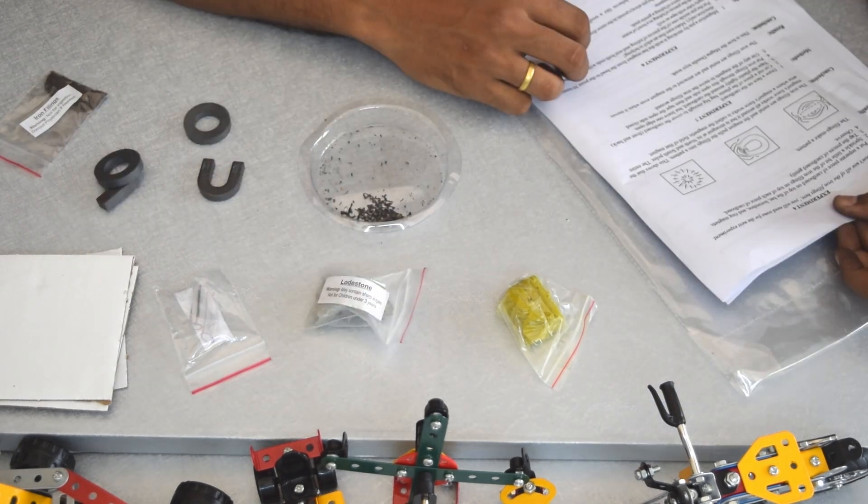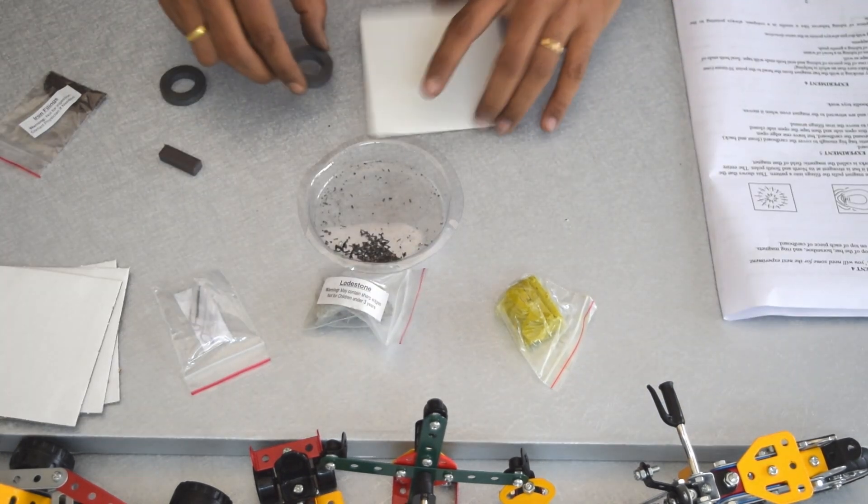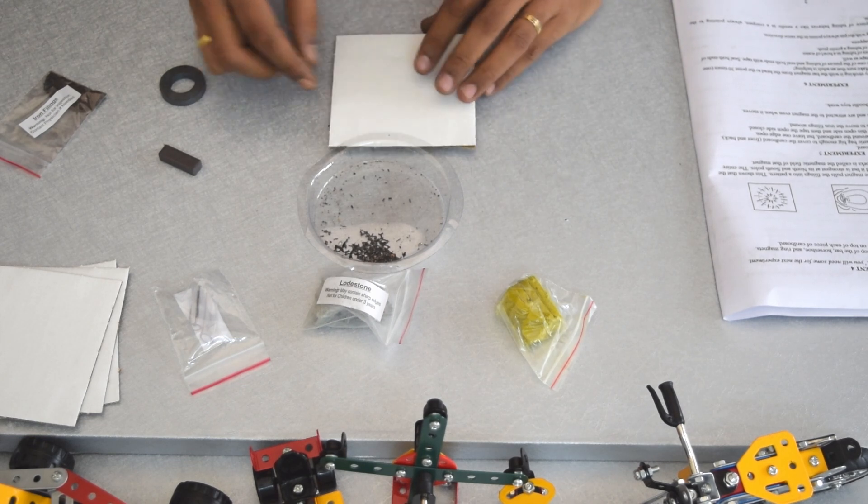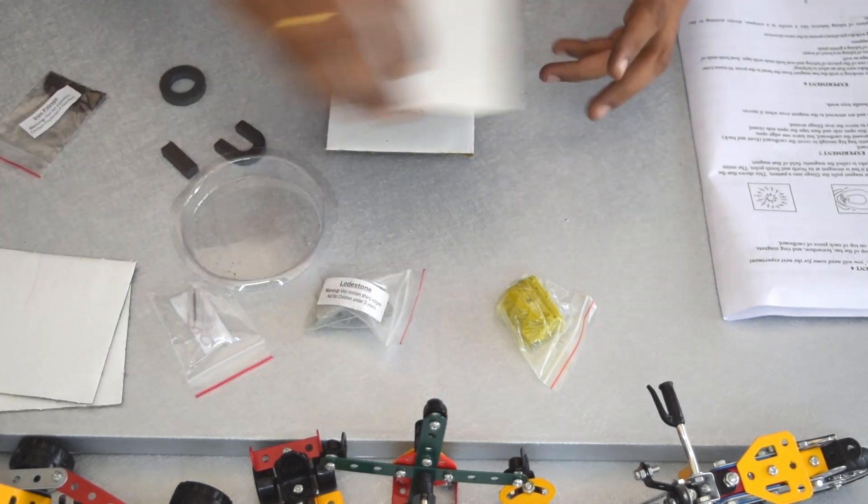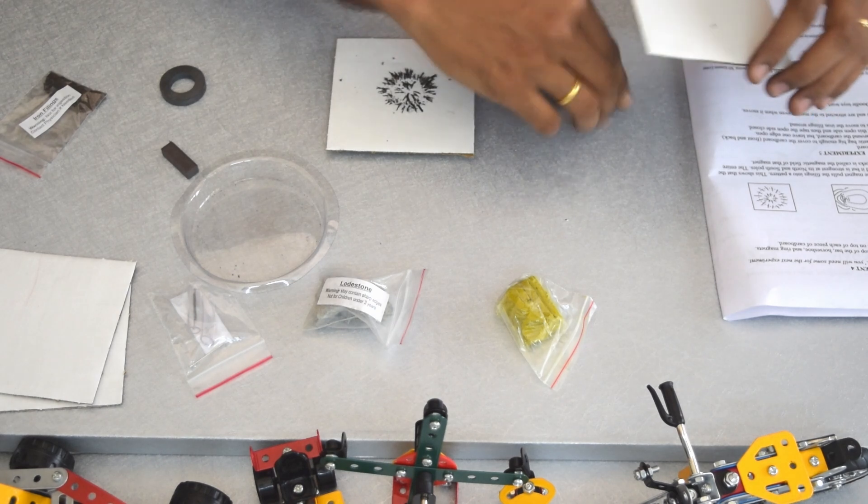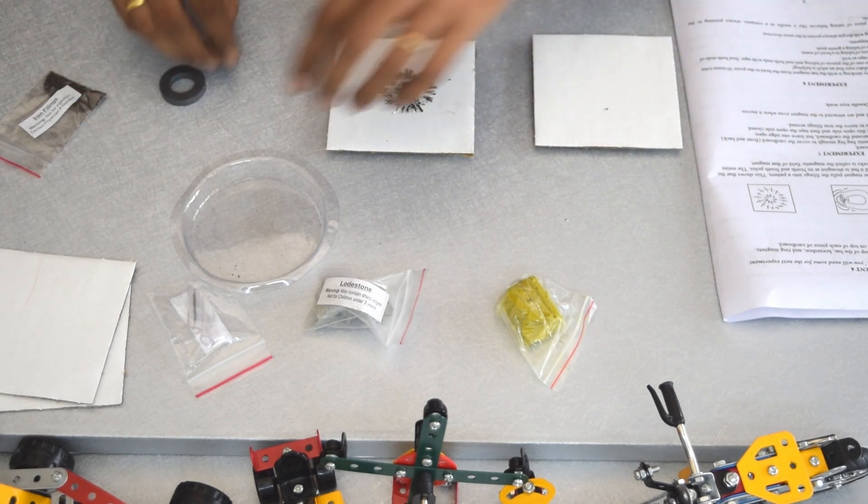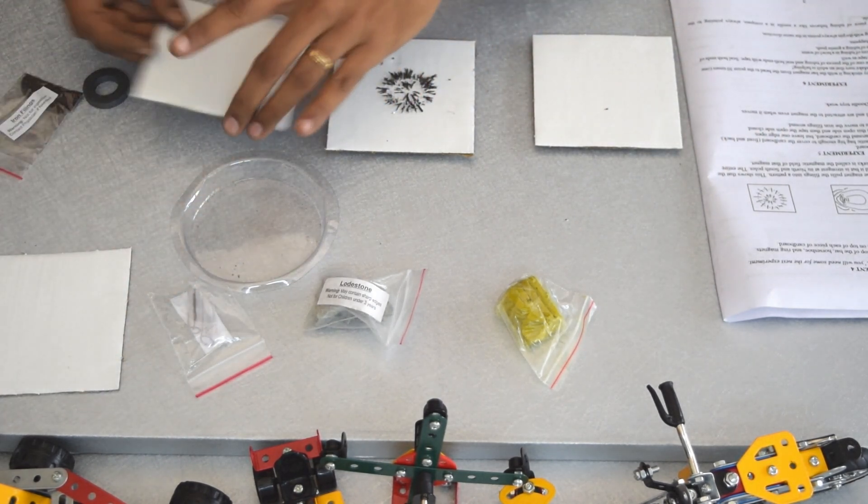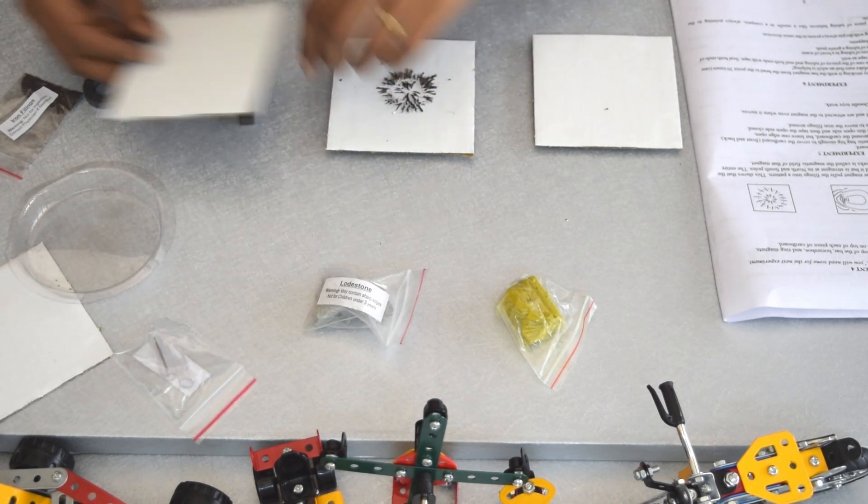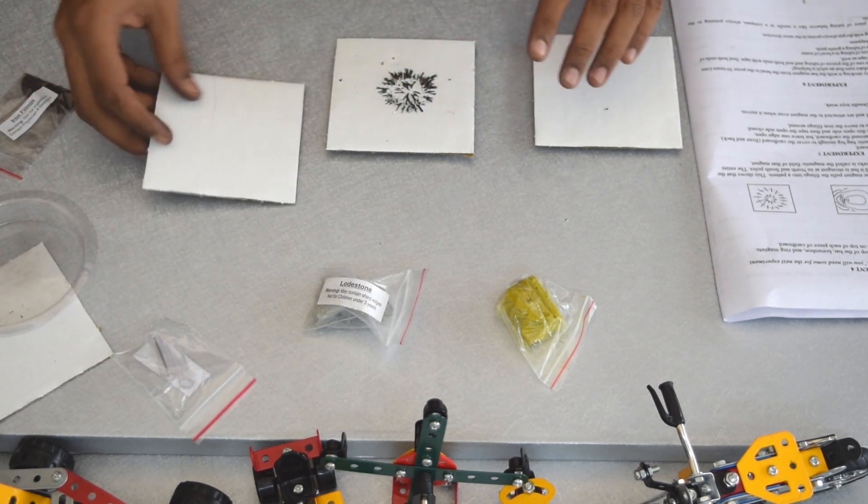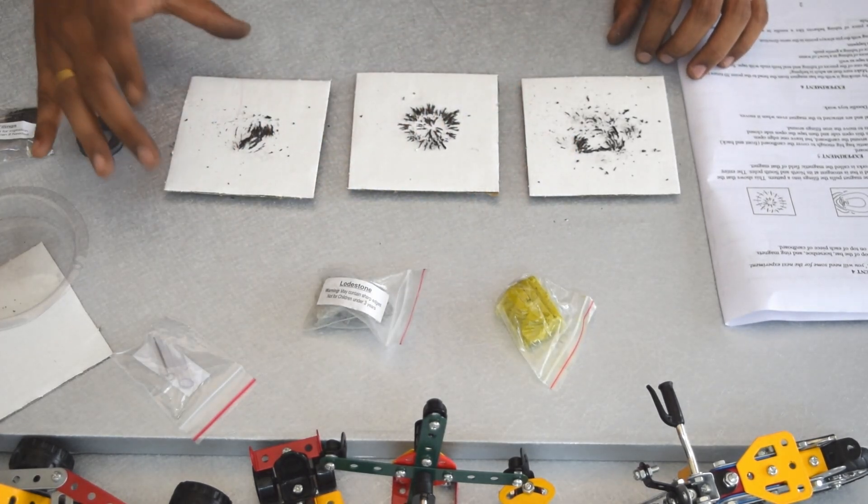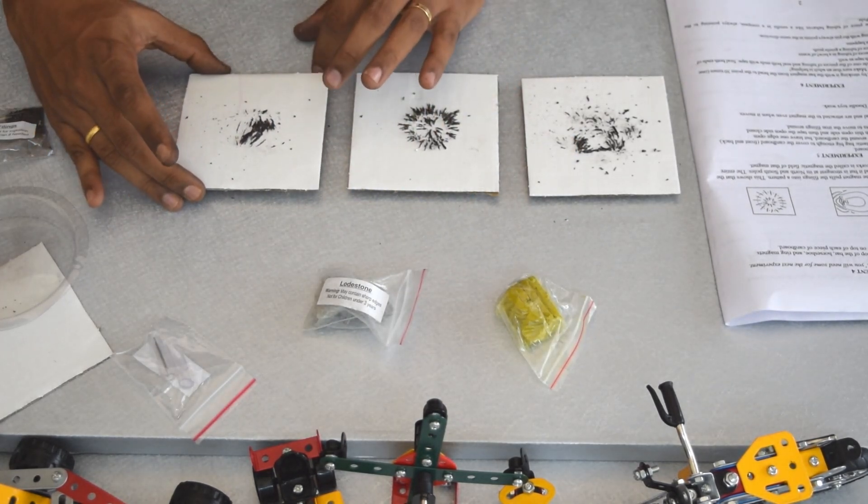We are moving to experiment number four. Let me place a ring magnet and then the cardboard. I'll do it in parallel. Put a horseshoe magnet then place the bar magnet here. We are asked to tap the piece of cardboard gently.